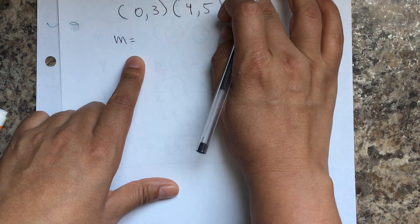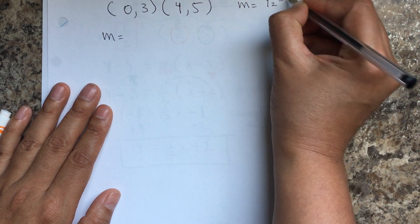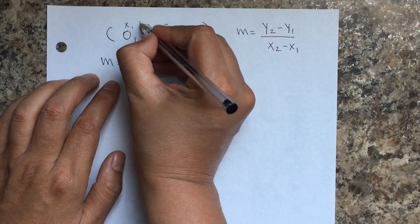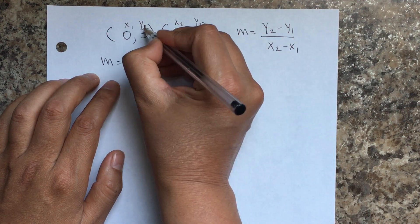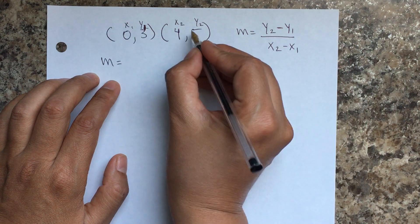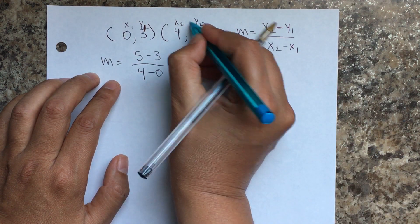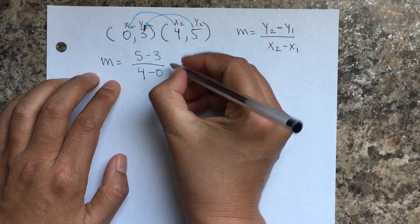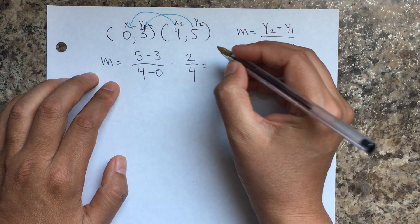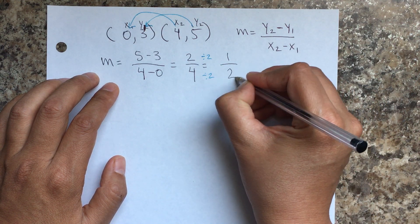First the slope. The slope is m equals y2 minus y1 over x2 minus x1. So this is x1, y1, x2, y2. Remembering that you are going to subtract: 5 minus 3 over 4 minus 0. And 5 minus 3 is 2, 4 minus 0 is 4. We remember that 2 fourths equals 1 half, because 2 divided by 2 is 1 and 4 divided by 2 is 2. So my slope is 1 half.